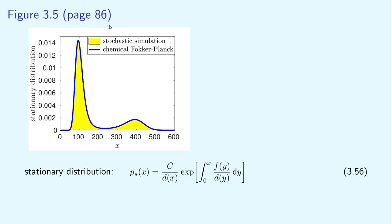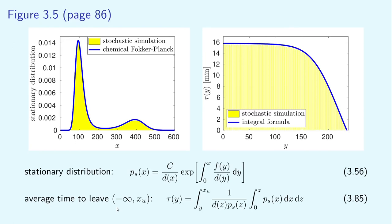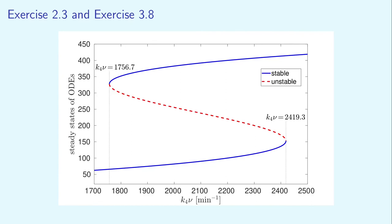This is illustrated in figure 3.5 on page 86, where I plot the stationary distribution in the left panel. The yellow histogram was obtained by the Gillespie algorithm and the blue line by formula 356, obtained by solving the stationary Fokker-Planck equation. In the same way, we can also compare results computed by the formula for the average time to leave the domain (-∞, x_u), obtained for the stochastic differential equations, with results calculated by the Gillespie algorithm. This comparison is presented in figure 3.5b.